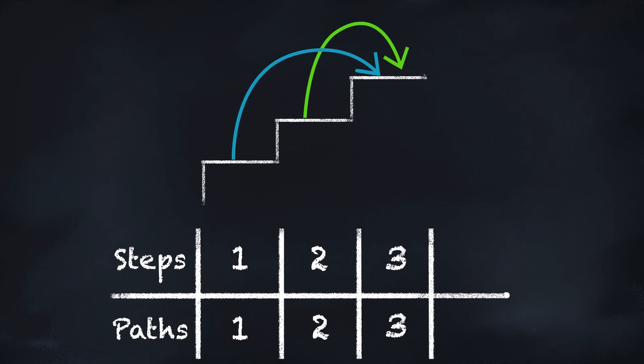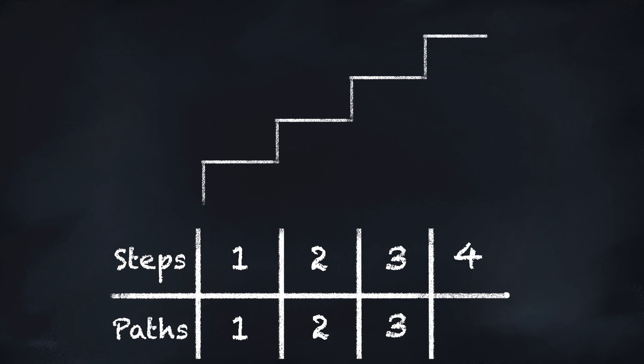Now we can start to see a pattern emerging, but let's take one more step just to be sure. To arrive at the fourth stair, we take one step from the third stair, already giving us three ways. We can also take two steps from the second stair, giving us an additional two ways, resulting in a total of five ways to arrive at the fourth stair.